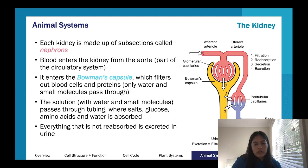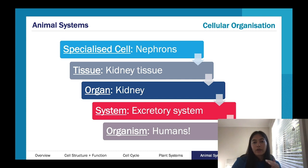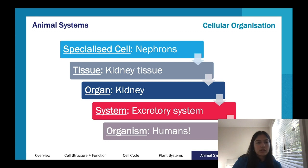Just understand it's this idea of excreting substances your body doesn't really need anymore. In terms of specialization: we've got our nephrons, we've got our kidney tissue leading to our organ of the kidney, which forms our excretory system — also known as our urinary system — leading to us as the organism.